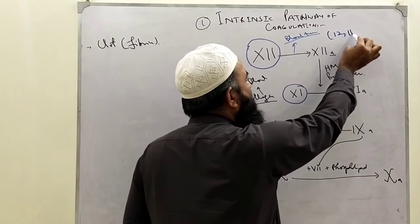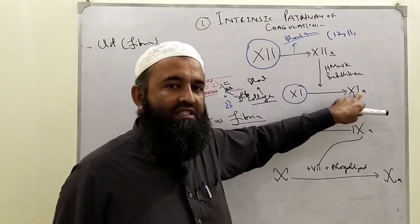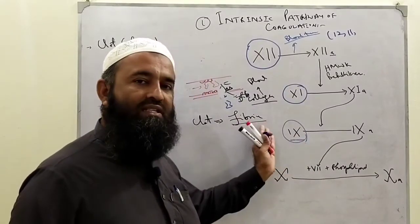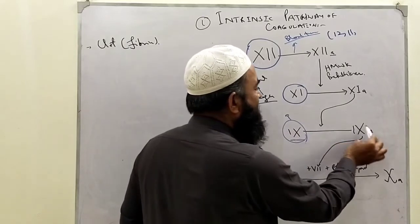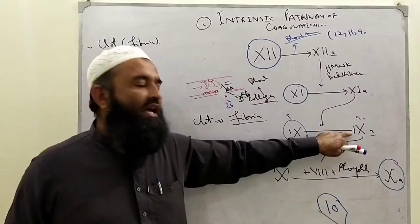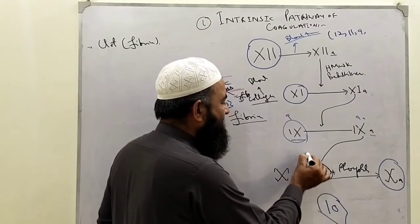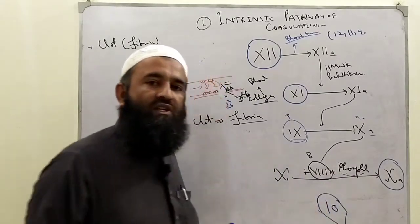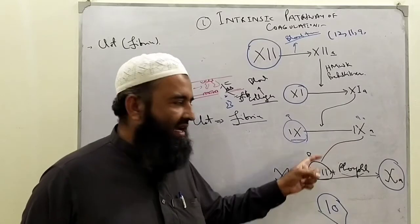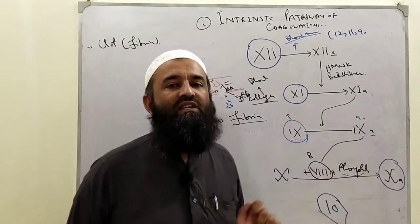Then activated factor 11 enzymatically activates factor 9, which becomes factor 9A — the activated form of 9. After factor 11, factor 9 is activated. Factor 9 then combines with factor 8 and phospholipids — phospholipids coming from the surface of platelets — to activate factor number 10 into activated factor 10A.